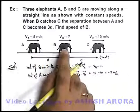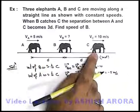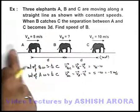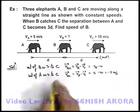Now we are given that at the time when B catches C, the separation between A and C becomes 3d. That means A has covered a distance d away from C in the time B catches C.